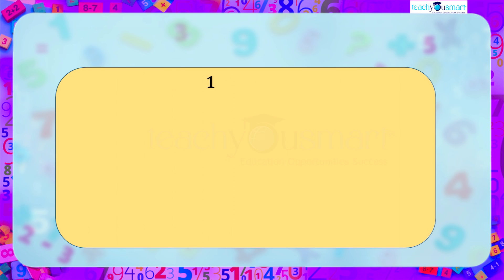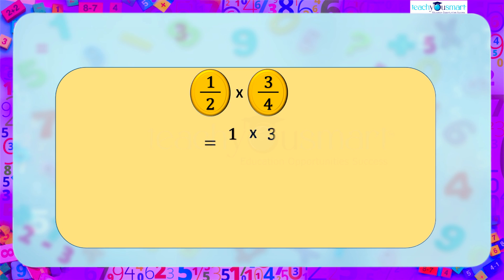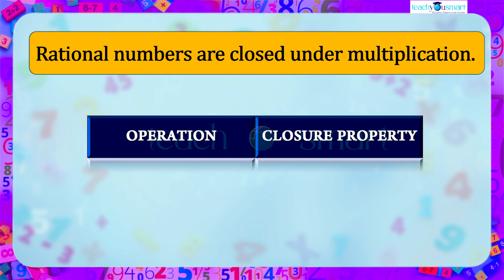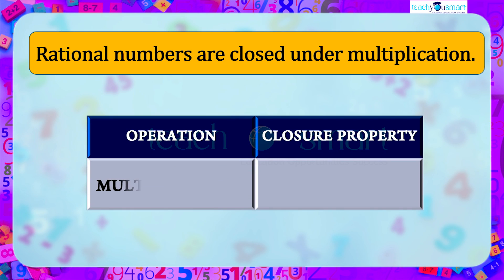On multiplying 1/2 and 3/4, we get (1 × 3) / (2 × 4) = 3/8, which is also a rational number — that is, rational numbers are closed under multiplication.